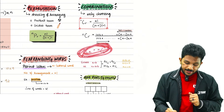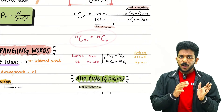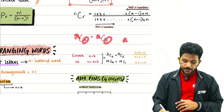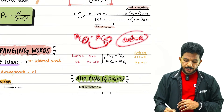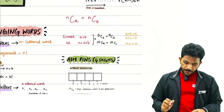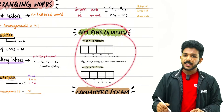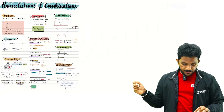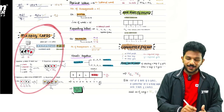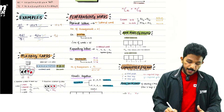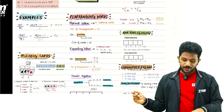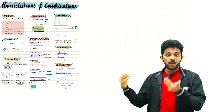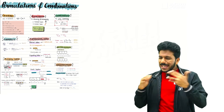NCR and NPR formulas are important. nCa equals nCb means a plus b equals the top number n — these two also add up to n. ATM pin, committees, teams — we will get the full theory of playing cards, rearranging words and examples. This is the formula sheet and short notes — you can explain everything.